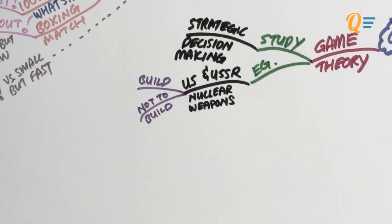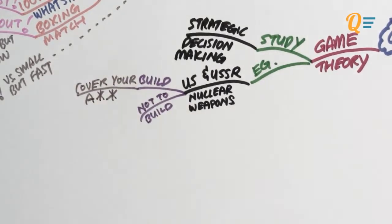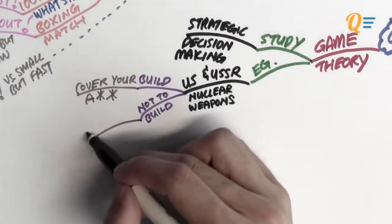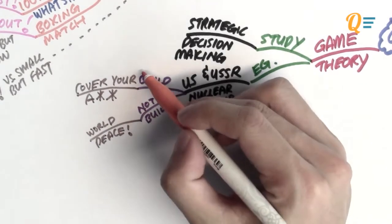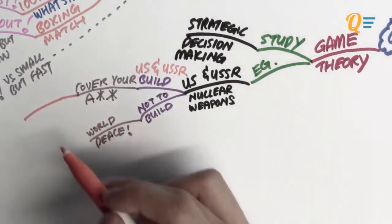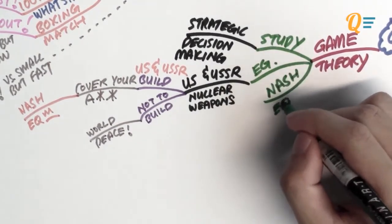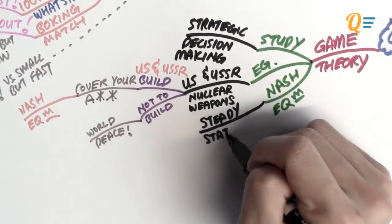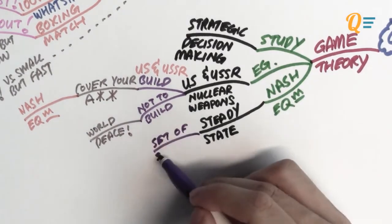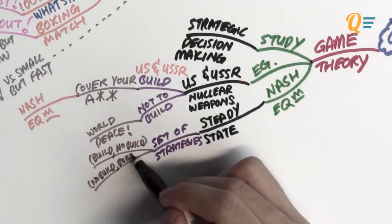The question is how do both countries decide? If you build nuclear weapons, you're covered in case war breaks out. But if you don't build nuclear weapons, you can have world peace. History shows that both the US and the USSR actually built their own nuclear weapons — and that is what we call the Nash Equilibrium. The Nash Equilibrium is a steady state whereby a set of strategies chosen by two parties results in neither party being able to benefit by changing their strategy.